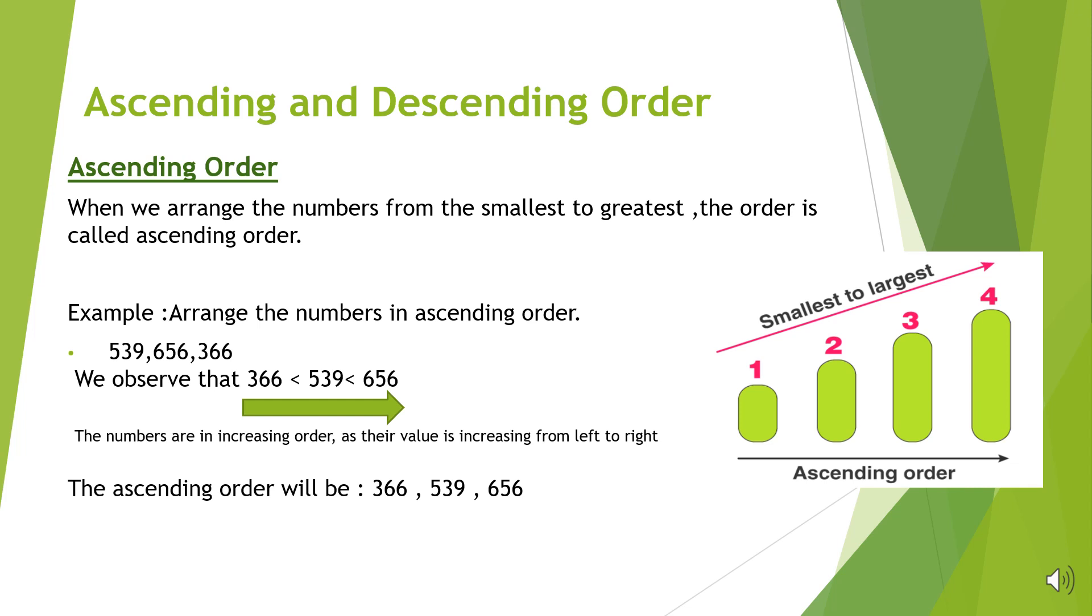Ascending order. Children, when we arrange the numbers from smallest to greatest, the order is known as ascending order. Let us see an example to arrange 539, 656, 366 in ascending order.